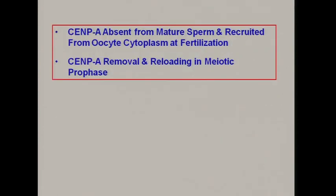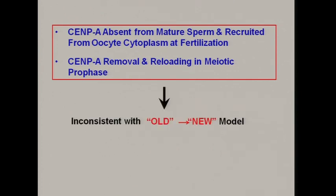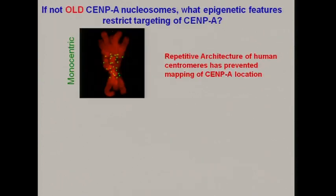The neocentromeres, the fact that CENP-A is absent from mature sperm and recruited from oocyte cytoplasm at fertilization, and the fact that CENP-A is removed and reloaded in meiotic prophase, all argue against the idea that old CENP-A marks the position of new CENP-A. So if it's not old to new, then what is it?